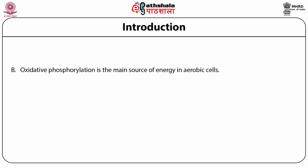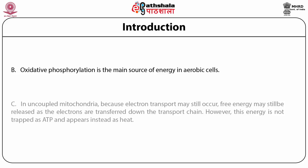Oxidative phosphorylation is the main source of energy in aerobic cells. In uncoupled mitochondria, because electron transport may still occur, free energy may still be released as the electrons are transferred down the transport chain. However, this energy is not trapped as ATP and appears instead as heat.